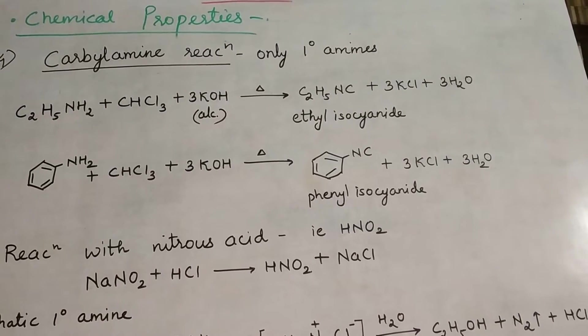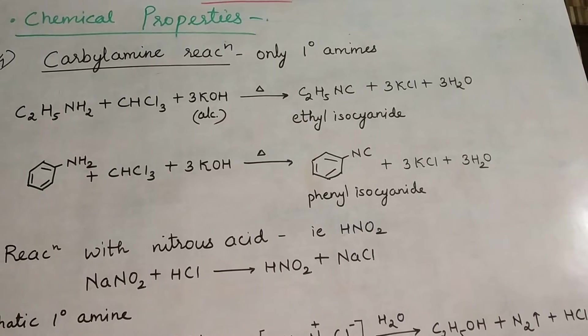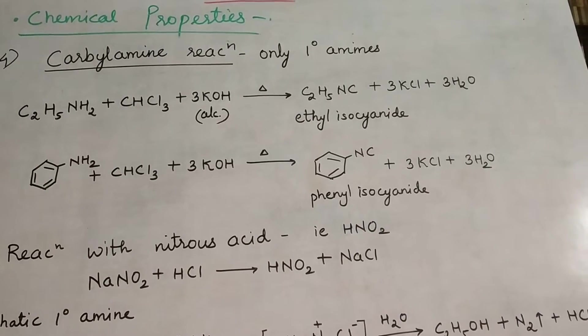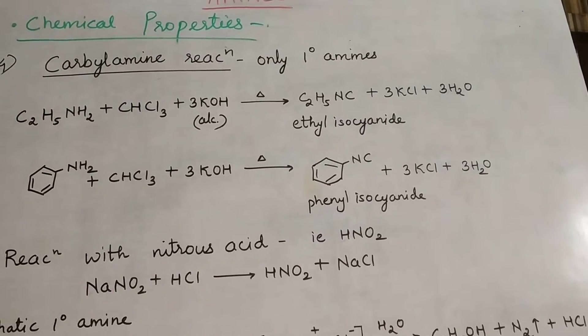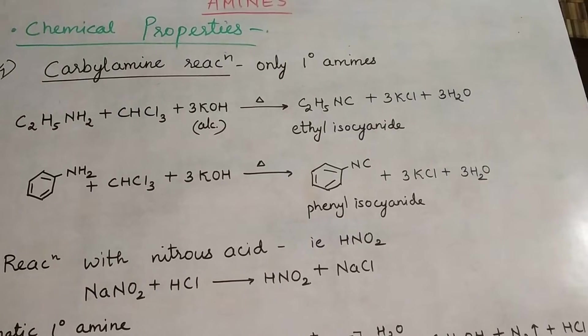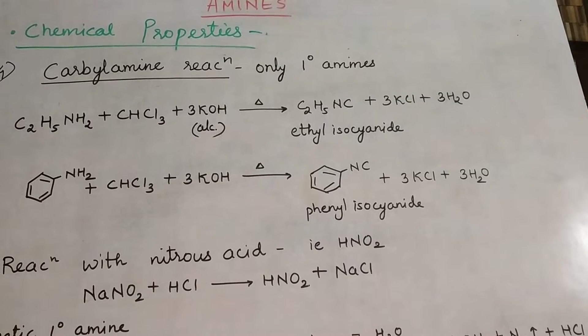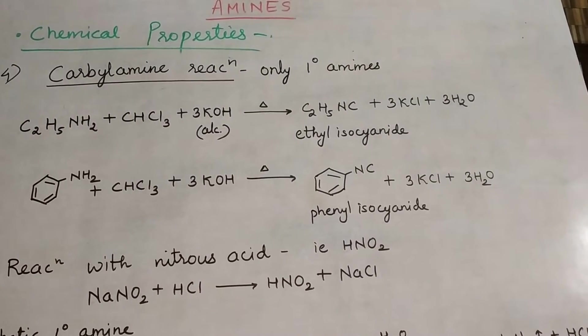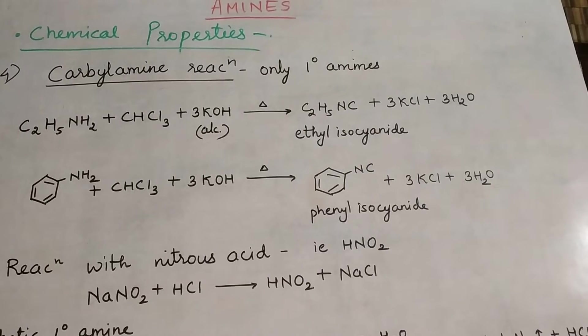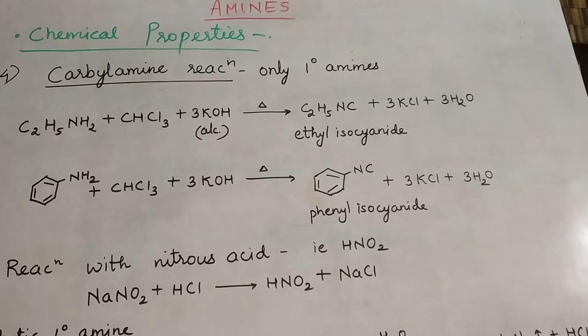In this reaction, primary amines, whether aliphatic or aromatic, are treated with chloroform (CHCl3) and KOH. This forms isocyanide compounds, also called carbyl amines. Hence, the reaction is called the carbyl amine reaction.